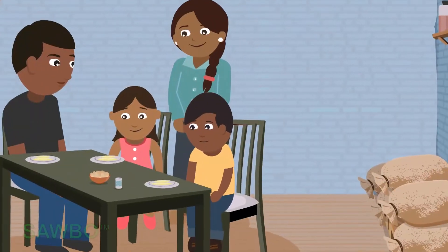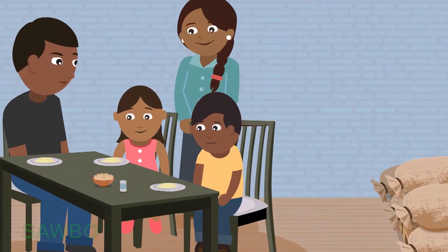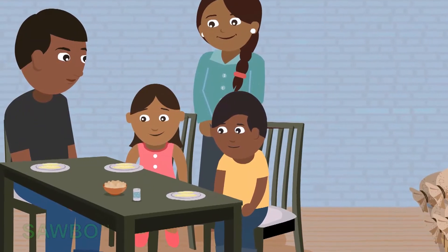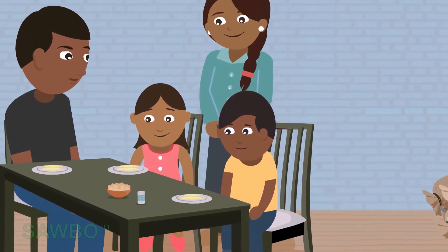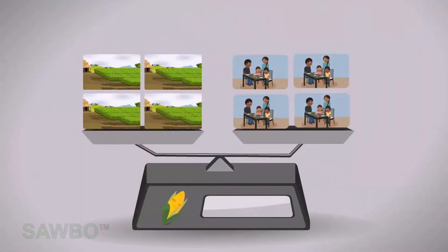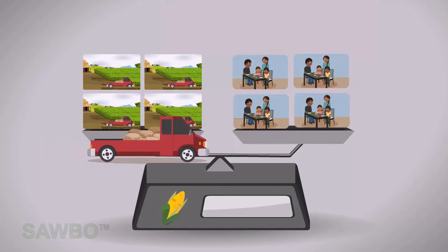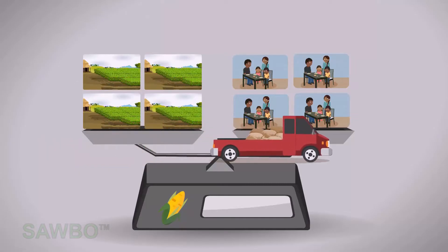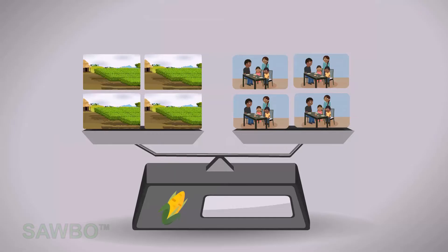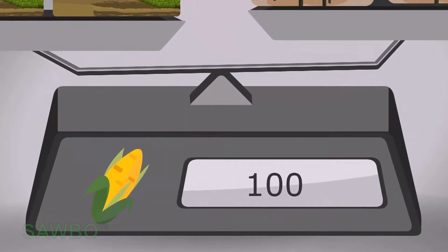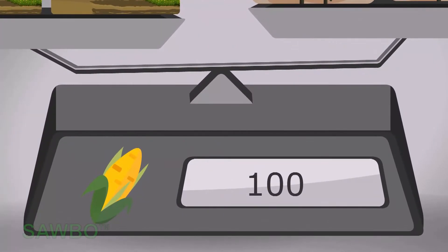On the right side, we see people eating the maize. This represents the consumption or demand side. The harvested maize is transported from the farmer's side to the consumer's side. We notice that supply and demand are in balance, and the indicator for the maize price marks 100 units for each bag of maize.